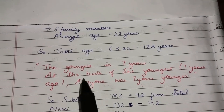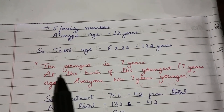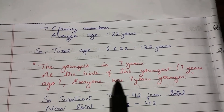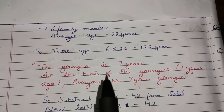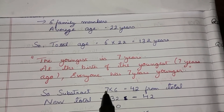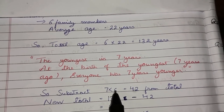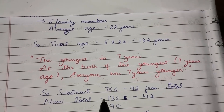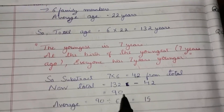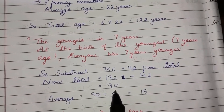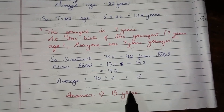The youngest is 7 years old, so at the birth of the youngest — 7 years ago — everyone was 7 years younger. To find the new average, we subtract 7 into 6, that is 42. The new total will be 132 minus 42, which is 90. The new average is 90 divided by 6 family members, giving 15. Hence option C is the right answer.